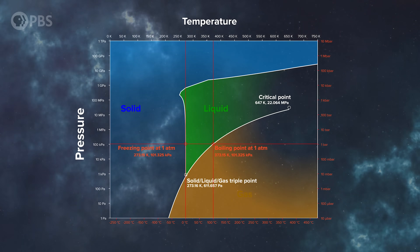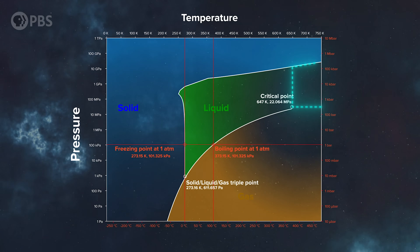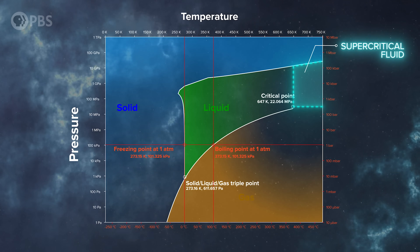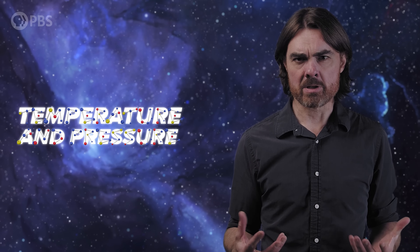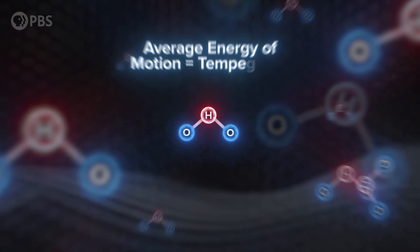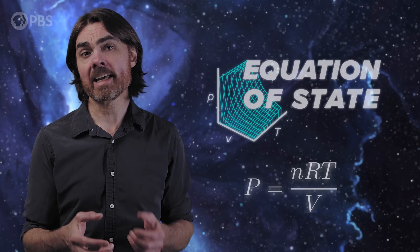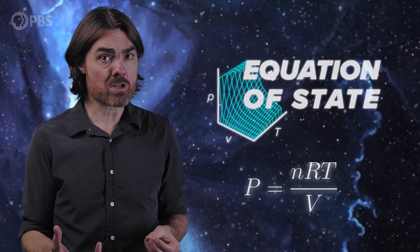The phase diagram shows us that things are much more complicated than solid, liquid, and gas. For one thing, there are secret hidden states of matter. For example, at temperatures and pressures above the critical point, the line between gas and liquid blurs, and we have what we call a supercritical fluid, which shares properties of both. The two numbers on the phase diagram — temperature and pressure — are statistical properties of large collections of particles. A single water molecule doesn't really have a temperature; it has a velocity, but the average energy of motion of all water molecules is its temperature. A state of matter defines how these various average properties relate to each other — what we call the equation of state. For example, in an ideal gas, pressure is proportional to temperature and inversely proportional to density.